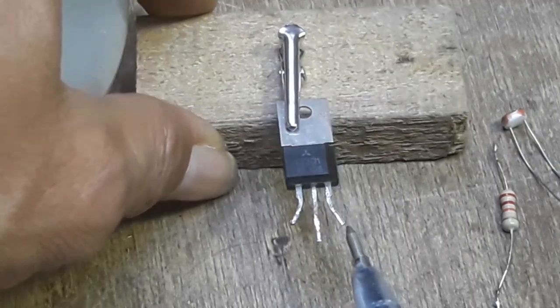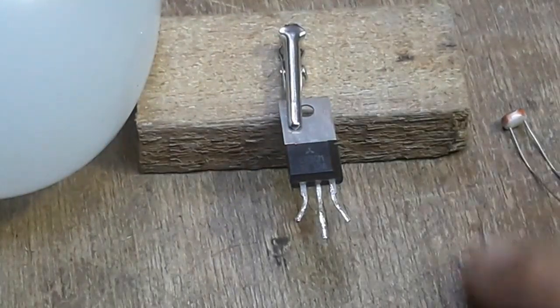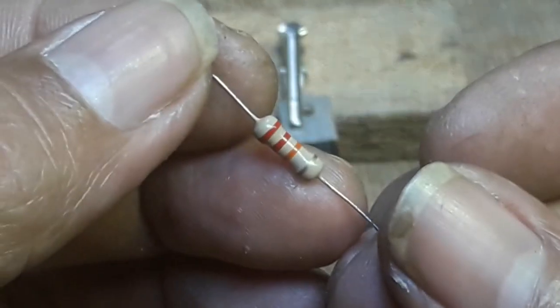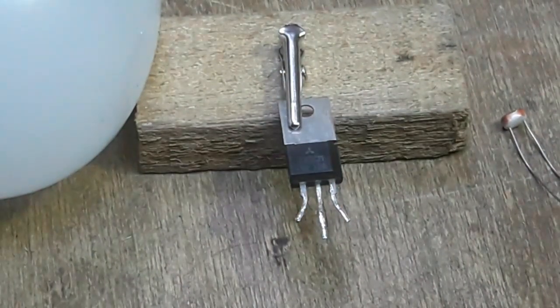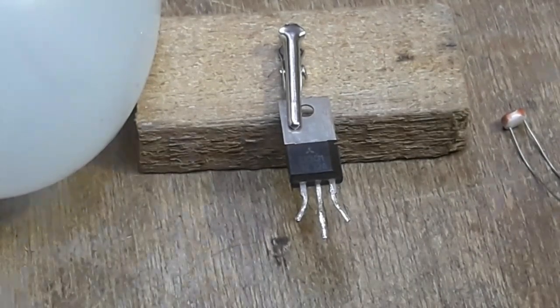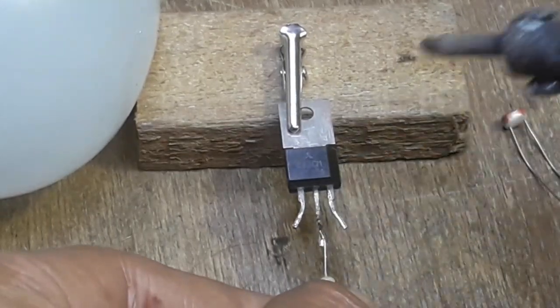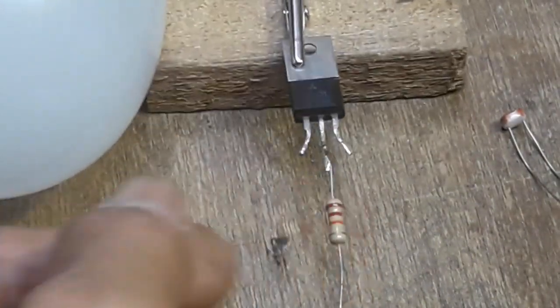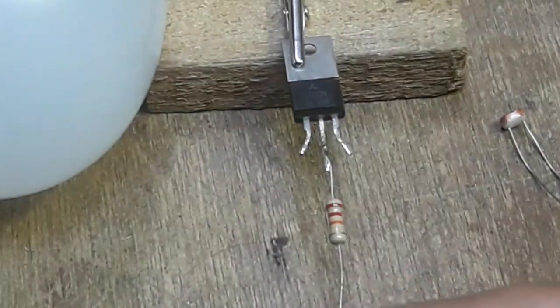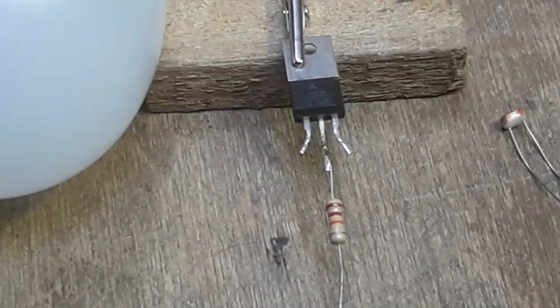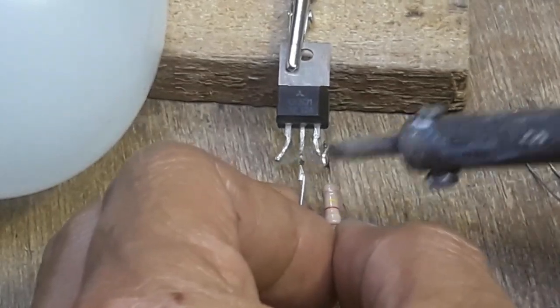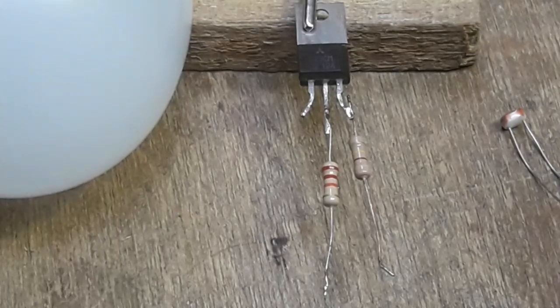Caranya gimana untuk pemasangannya. Untuk R 22 kilo ohm, posisikan di anoda. Kita solder dulu, posisikan di anoda di tengah. Sedangkan untuk R selanjutnya, R ini posisikan di bagian gate, gate yang sebelah sini.